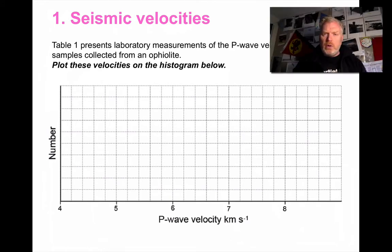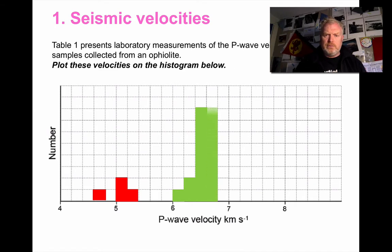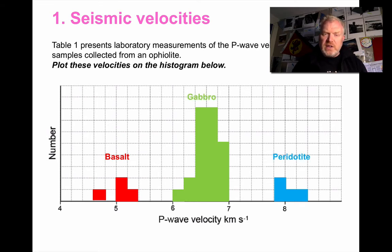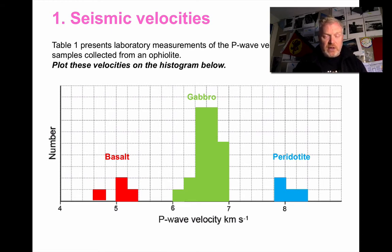Your graph should look something like this — we've got a small number of measurements and we can label up our rock types. We can see that different rock types have different seismic velocities, going from basalt with the lower velocities through to gabbro through to peridotite. There are clear gaps and clear differences between these different rock types. It's how we can tell from seismic evidence that the different layers within the oceanic crust are of a different rock type.